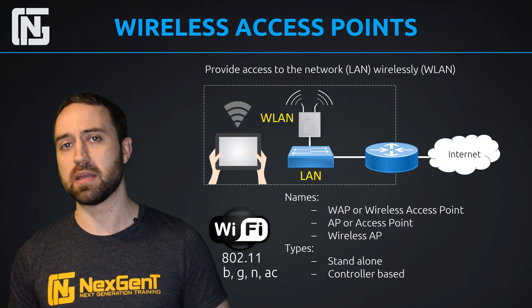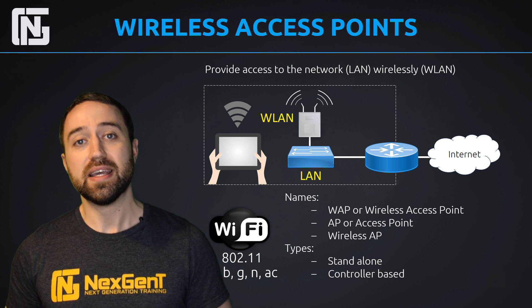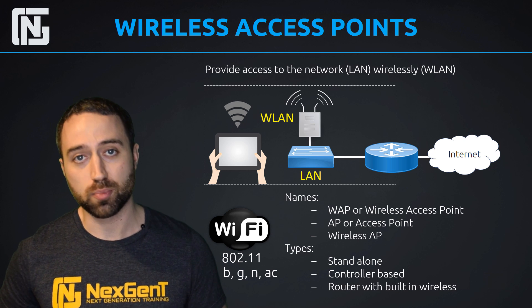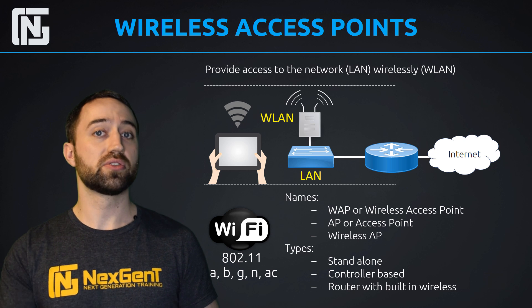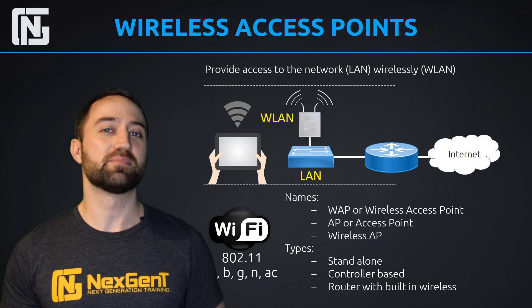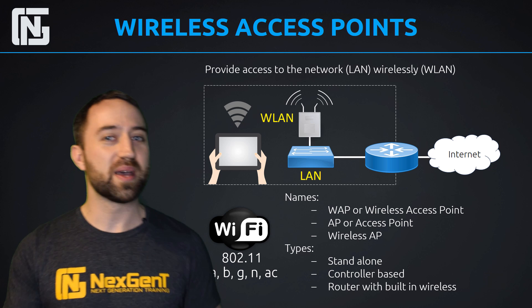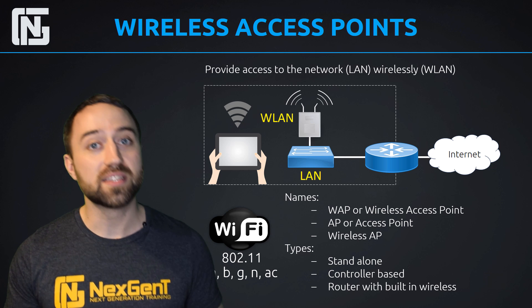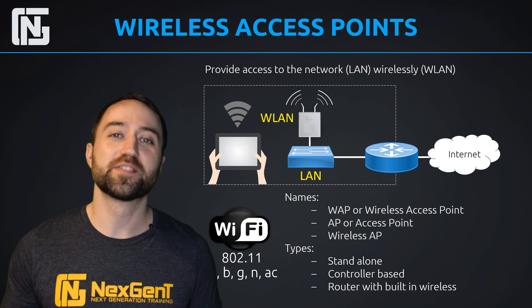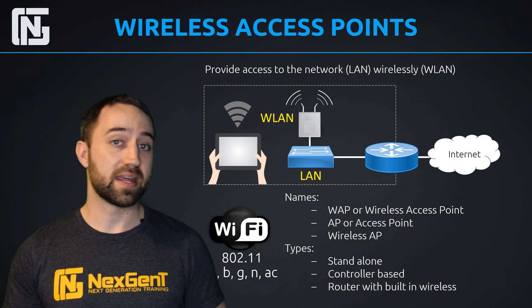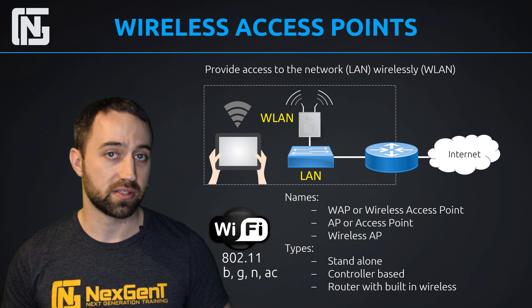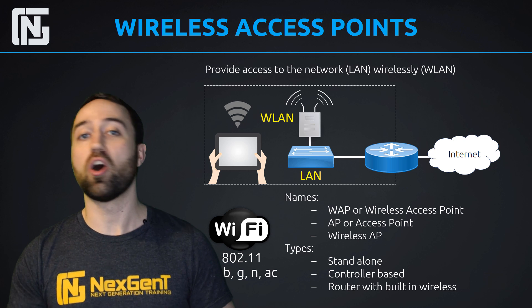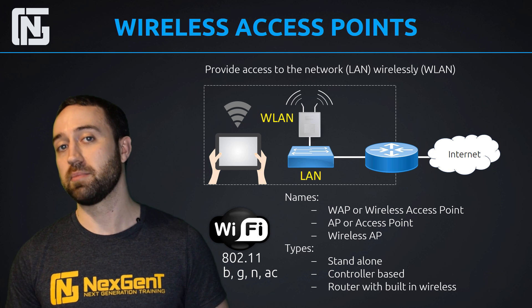The last type of wireless AP is a router with a built-in access point. The router at your house that provides internet access is likely one of these. When you go to Walmart or Best Buy and buy something like a D-Link, Linksys, or Netgear router, usually it's a router with built-in wireless access — really a triple combo device with a router, a switch, and a wireless AP all built into the same device.